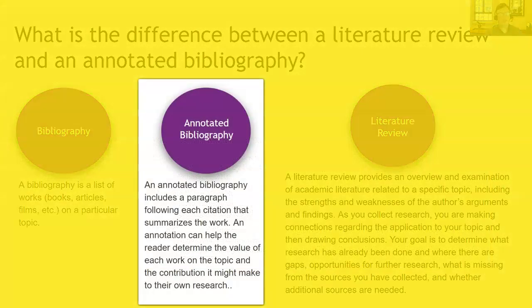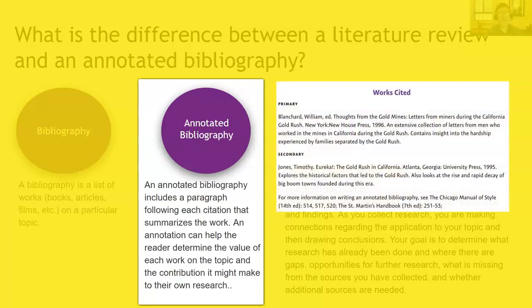Next is an annotated bibliography, which most students have been asked to do before. That usually includes about a paragraph for each citation, basically to help the reader understand why you're going to use the source and how it contributes to the overall research. It may also have some analysis — you may engage with whether the resource is useful, how it's useful, or if there are shortcomings. But in an annotated bibliography, you treat each source separately, so there's really no synthesis. It's just a summary of each.